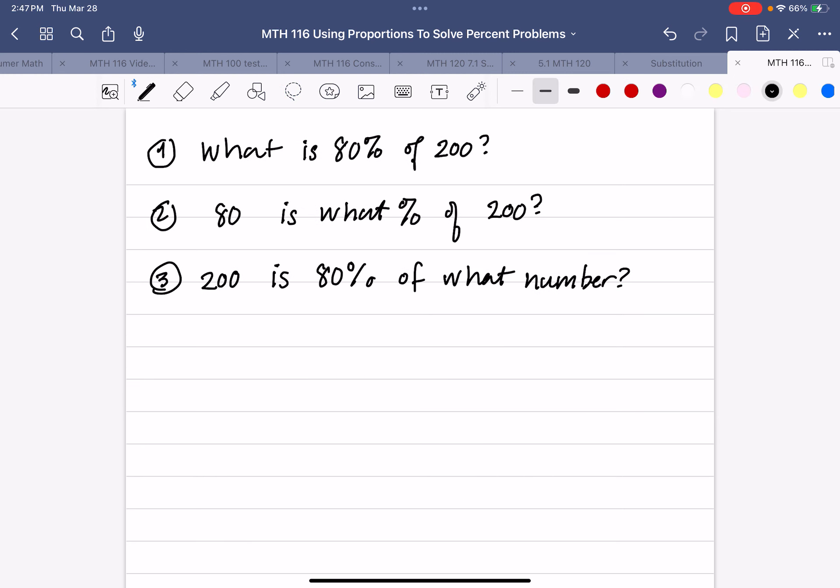So, number one, percent over 100 equals is and after of. So, notice that what is attached to the is. What is, we don't know, so we'll call that x. Here's my percent, and here's my after of. And of is always going to be in front. The is may be front or behind, but the of will always be in front of the number. So, 80 out of 100 is x over 200.